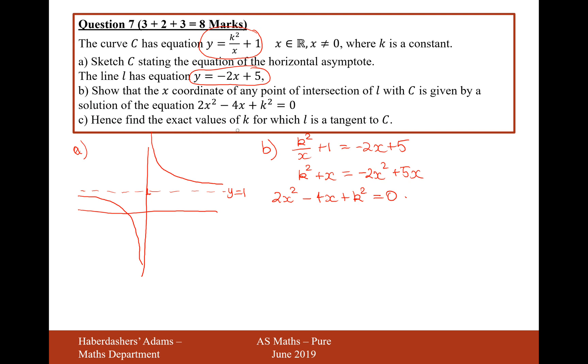Hence, find the exact solution of k for which the line L is a tangent to C. So if a line is a tangent to a graph, then when you've rearranged it and you are at the point of working out the quadratic, b squared minus 4ac will be exactly equal to 0.